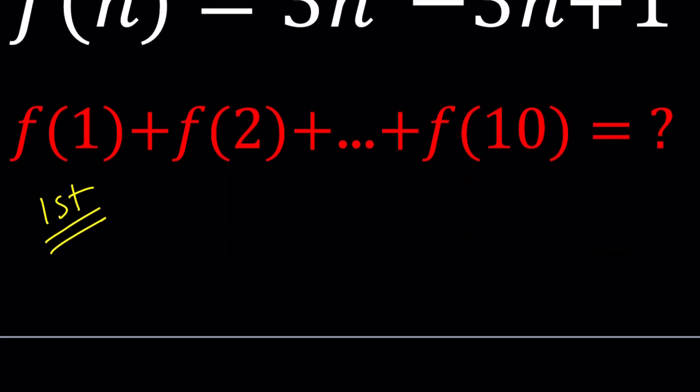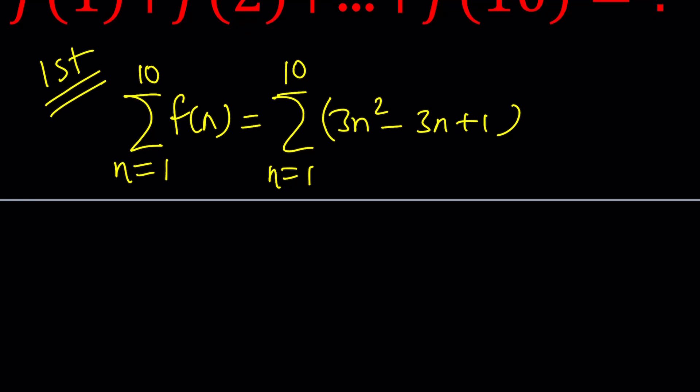For my first method, obviously, I can write this using the sigma notation, can't I? So in other words, I'm trying to look for the sum of f of n, where n goes from 1 to 10, and then f of n can be replaced with 3n squared minus 3n plus 1. So this is the sum I'm looking for, using sigma notation.